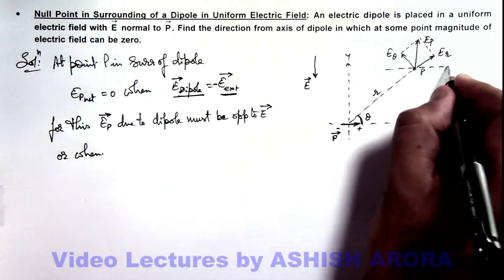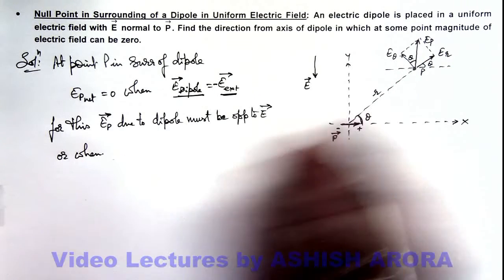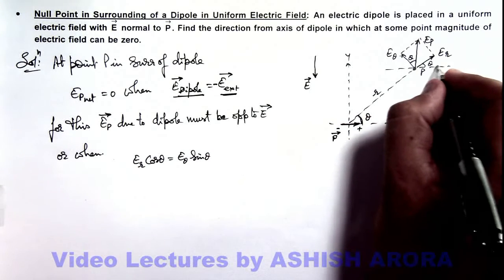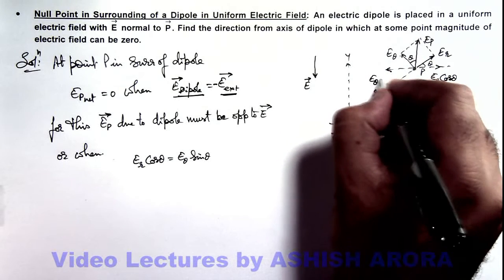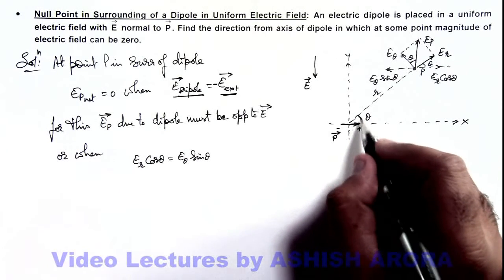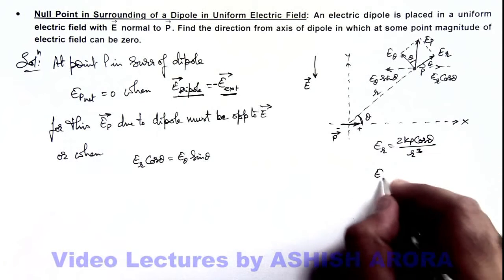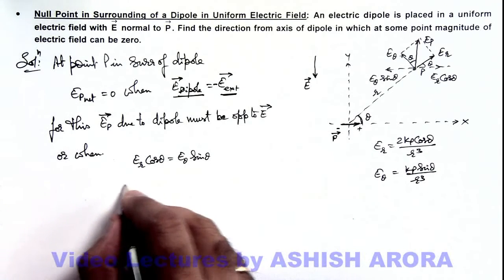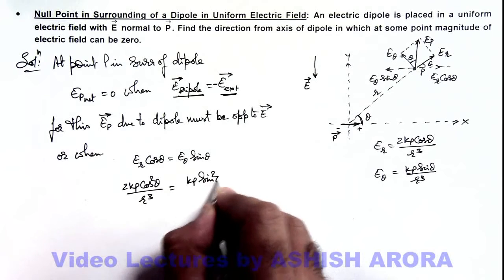This will happen when the horizontal components of the two field components are equal. If this angle is theta, then E-r cosθ equals E-theta sinθ, because the horizontal component of the radial field is E-r cosθ and the horizontal component of the transverse field is E-theta sinθ. Substituting the known values — E-r equals 2kp cosθ / r³ and E-theta equals kp sinθ / r³ — we get 2kp cos²θ / r³ equals kp sin²θ / r³.